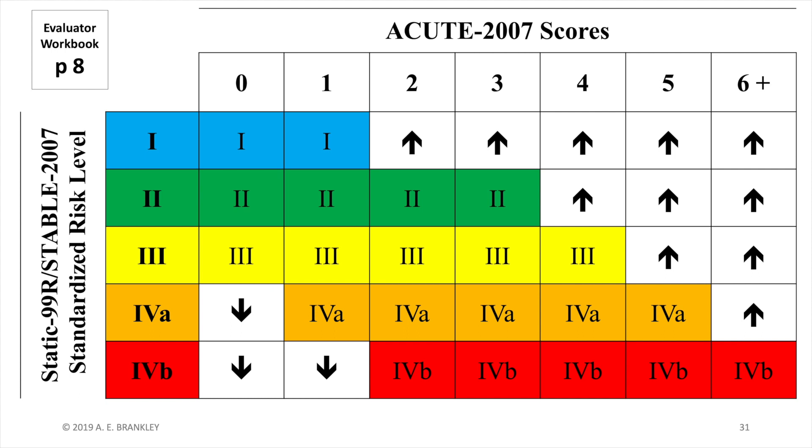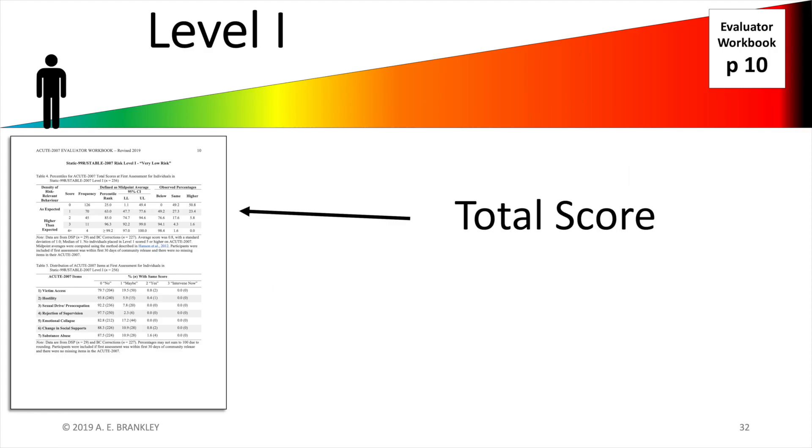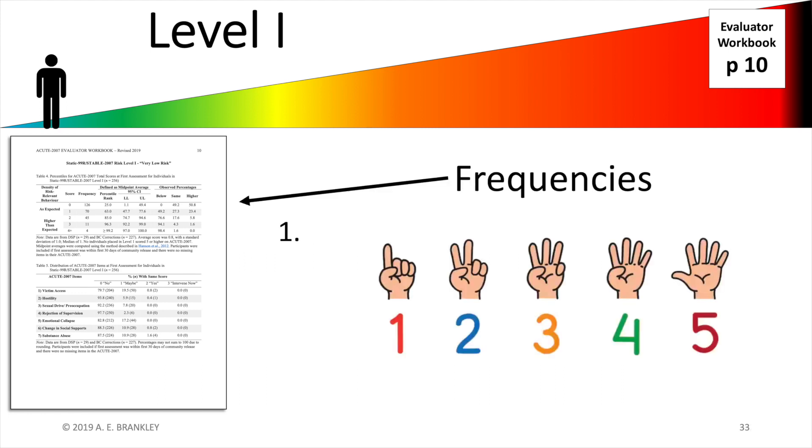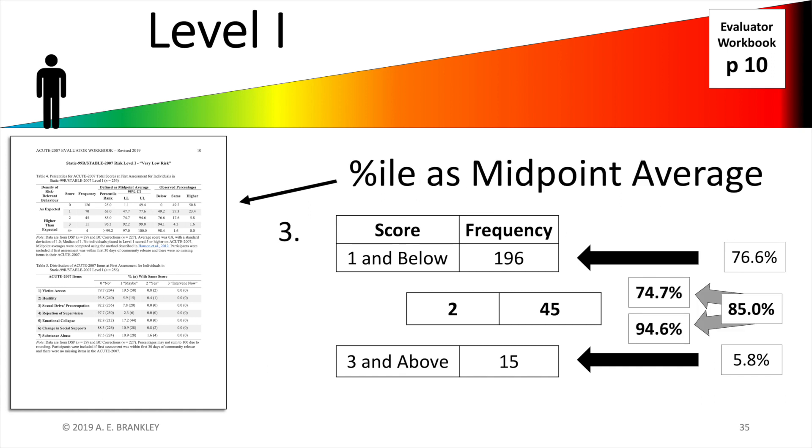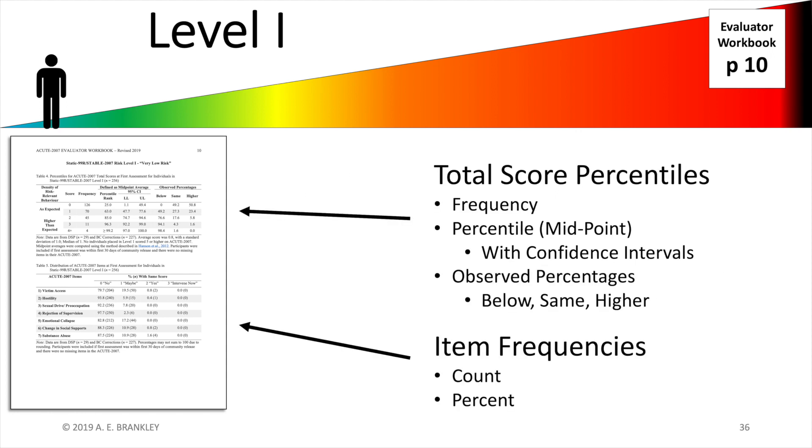An implication of this is that acute scores have to be interpreted within the context of the individual's static stable risk level. To do this, we produce normative tables for each risk level. Most percentile tables are a single page. At the top of the page, there is a table for the total score. This table includes counts or the frequencies of individuals at each score, the percentages of individuals at that risk level who got each score, who were below that score, and above that score, and our preferred way of communicating risk with the acute, percentiles defined as midpoint average. At the bottom of each page is information about the individual items. This includes the raw count of individuals at each score and the percentage.